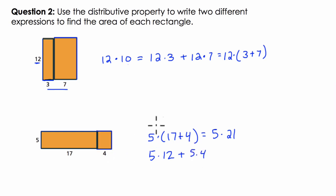So this just shows you that the distributive property works. In other words, if I give you this expression, 5 times (17 + 4), you could do 5 times 17 and then 5 times 4 and add them together. Here, you can do 12 times 3 and 12 times 7, and then add them together. Or you could add what's in the parentheses first and then multiply it by 12 or 5. Alright, hope this helps.